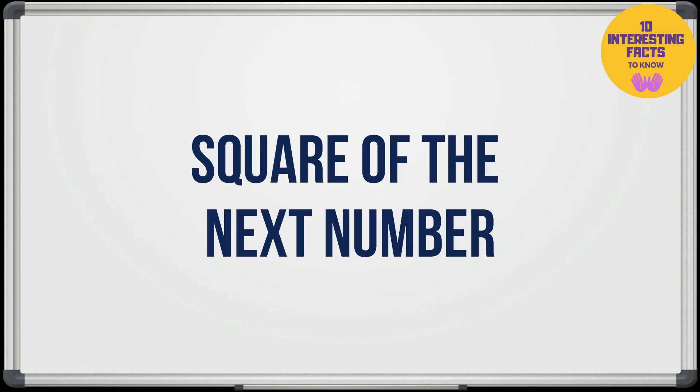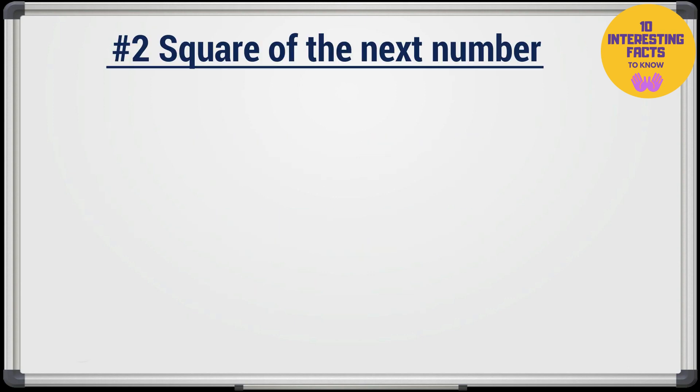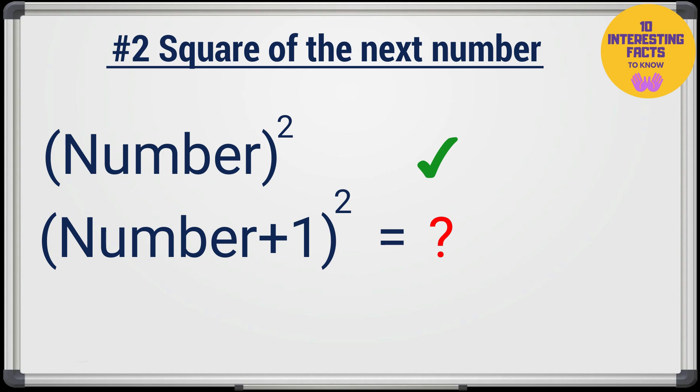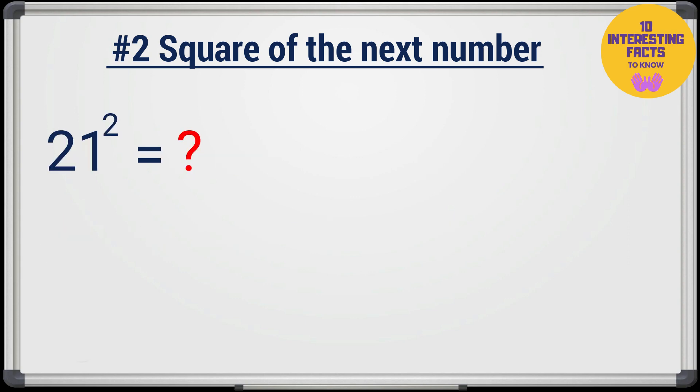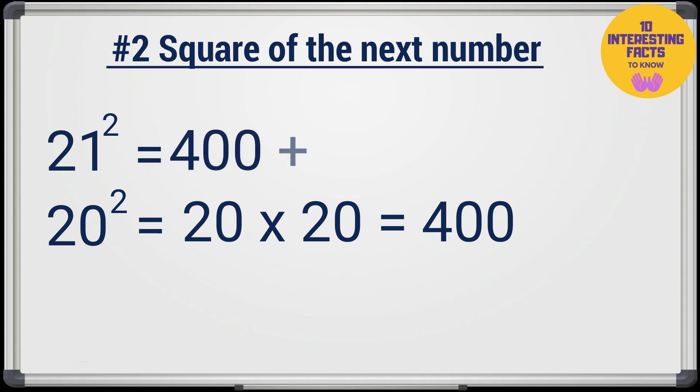Square of the next number. That is, if you know the square of a number, how can you quickly find the square of the number next to it. For example, we have to find the square of 21 which is next to 20 and we know the square of 20 is 400. Now to 400 just add 20 and 21, that is 441, and that's the answer. Simple, right?